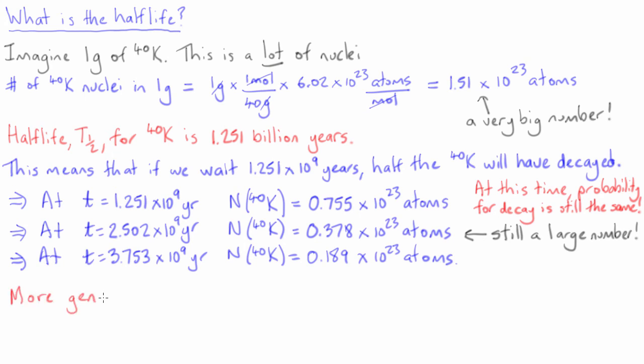Following this logic, we can write the general relationship that after n half-lives, the number of nuclei that are left is equal to the original number of nuclei, N0, times one-half to the nth power.